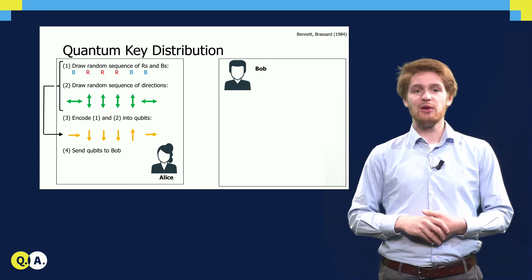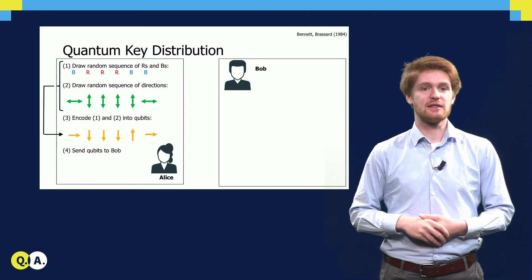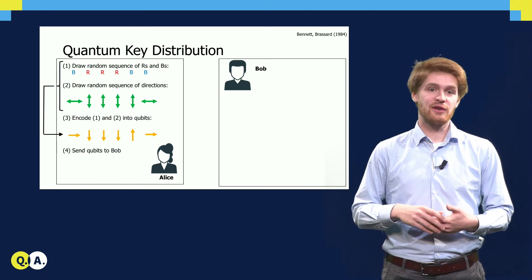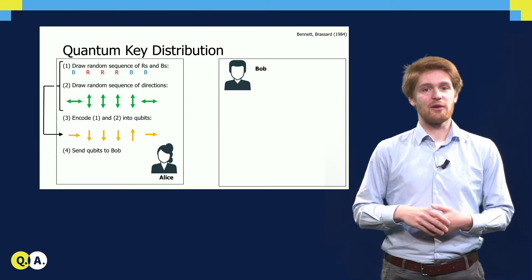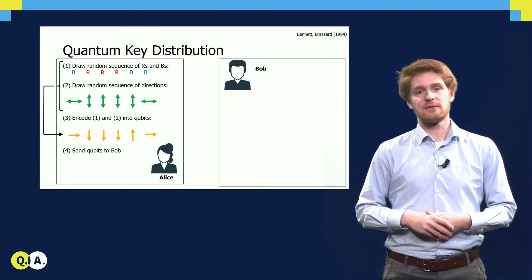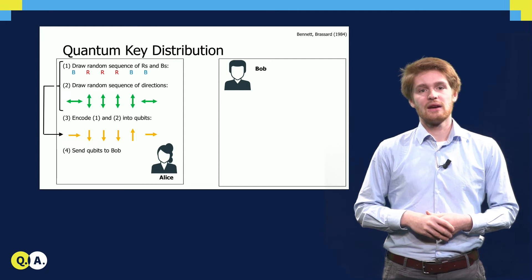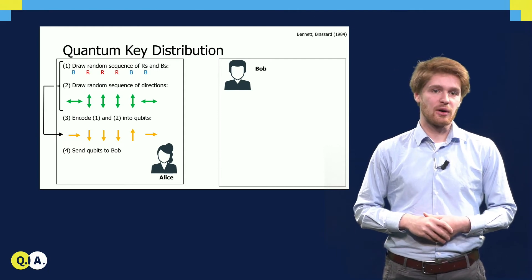For example, she turns blue plus horizontal in a right-pointing state, she turns red plus vertical in a down-pointing state, and so on and so forth for the remaining qubits in the random sequences. And these qubits, these she then sends to Bob.